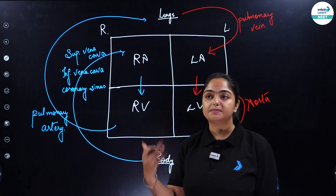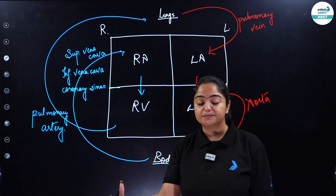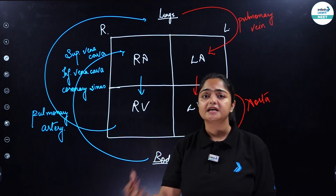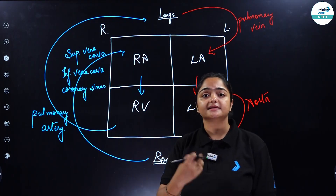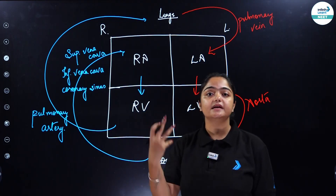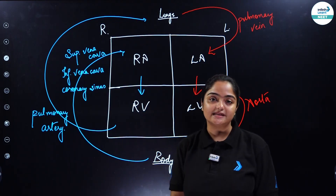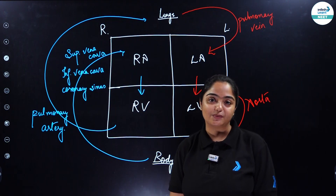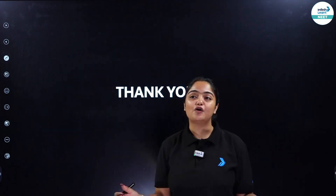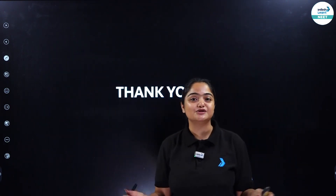So that covers the double circulation topic. We have also covered the cusps and valves present, the septa, chordae tendinae, and papillary muscles — each and everything for this topic.